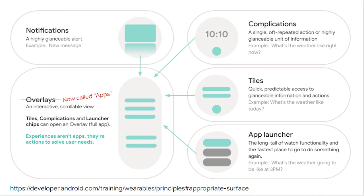On Wear OS you have different surfaces: notifications, which we all know; apps, the normal apps you see on the Wear device; complications, which are tiny pieces of data on a watch face like step count, weather, or heart rate; tiles, which are like entry points into your app — similar to widgets on Android — where clicking takes you into the major functionality; and the app launcher, the normal icon for launching your Wear OS app's home screen.